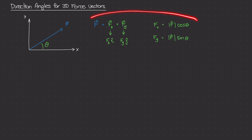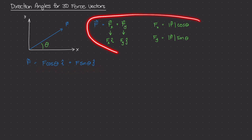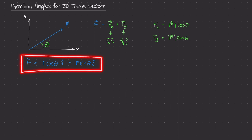If we combine all of this together, this force vector F is equal to F·cosine(theta) times the unit vector i — that's the scalar quantity of the F_x component — plus F·sine(theta) times the unit vector j. This was our definition of the force vector in the 2D plane: it had an x component and a y component.